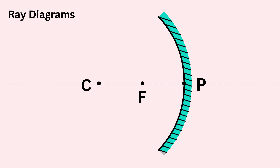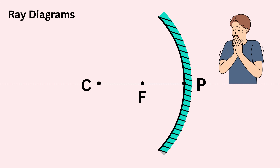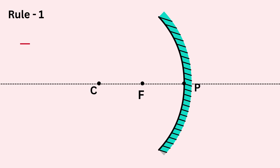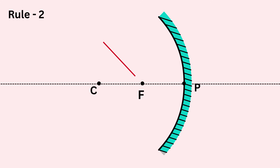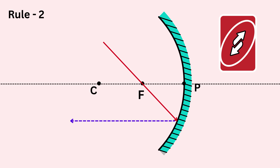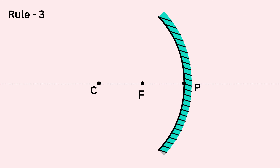Now let's learn how to draw ray diagrams for a concave mirror. You only need three simple rules. Rule one: if a ray comes parallel to the principal axis, it reflects and passes through the focus. Rule two: if a ray passes through the focus before hitting the mirror, it reflects and goes parallel to the principal axis — the reverse of rule one. Rule three: if a ray goes through the center of curvature, it reflects back along the same path.